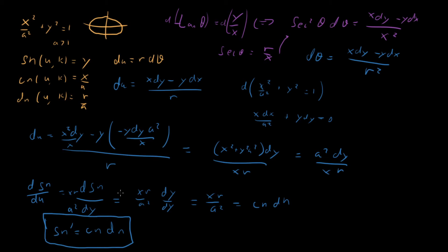Let's sanity-check this against circular trig, where the derivative of sine is cosine. In the circular case, dn = 1, so we get sn′ = cn · 1 = cn, which matches sine′ = cosine. So we recover the circular result through this generalization, confirming the answer makes sense.